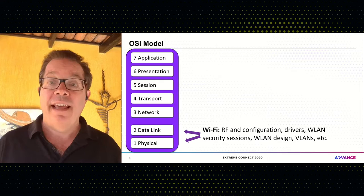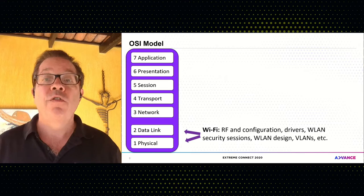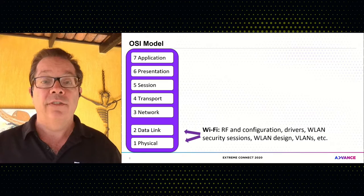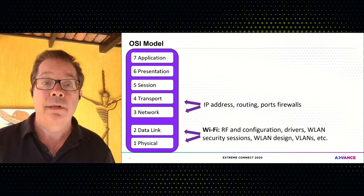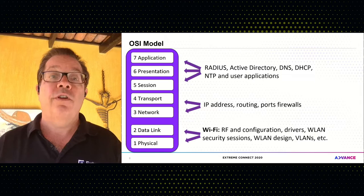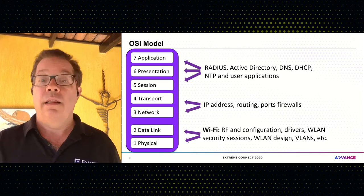At layer one, your Wi-Fi issues are going to be anything RF related — antenna related, mounting related, or Wi-Fi drivers and clients. When you move into layer two, you start dealing with things like security and VLANs. When you move to the higher layers, it is no longer a Wi-Fi problem. At layer three and four it's improper IP addressing, routing issues, ports, and firewall issues. As you move into the higher layers, you're talking about applications: RADIUS, Active Directory, DNS, DHCP — not down at the lower layers where Wi-Fi operates.